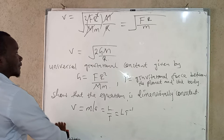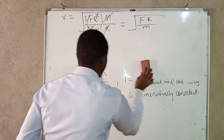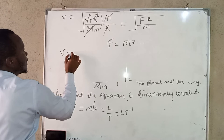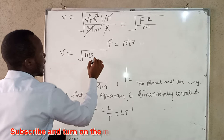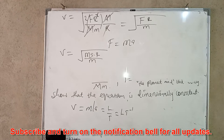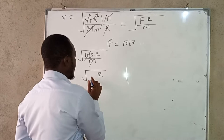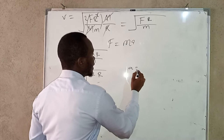From this point, we know that force F equals mass times acceleration, so F equals ma. If we plug this into our expression, we get the square root of ma times r over m. We can see that the mass m cancels, leaving us with the square root of ar, where a is acceleration and r is the radius.